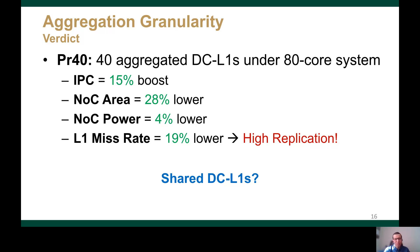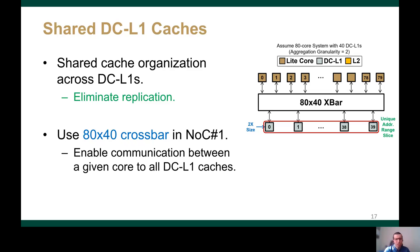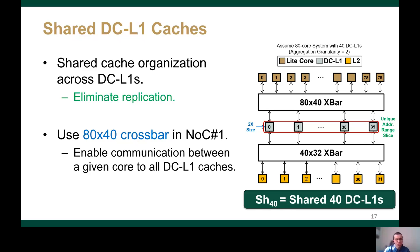We need to think about innovative ways to further reduce or totally eliminate the replication across the DCL1s. To eliminate data replication across the DCL1s, we use a shared cache organization across all DCL1s in the system, where each DCL1 cache is assigned a unique slice of the address range. To connect these 80 light cores to the 40 shared DCL1 caches, we use an 80-by-40 crossbar in network number 1. The DCL1s are connected to the L2 using a 40-by-32 crossbar. We refer to this design as SH40.